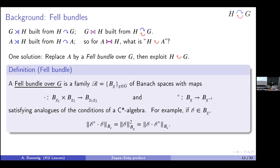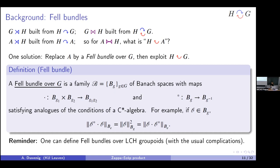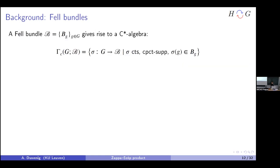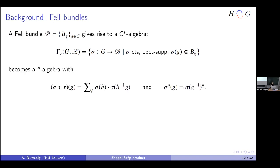These Banach spaces satisfy C*-like properties: for example, the norm of b*b equals the square of the norm of the element. I'll give examples on the next slide to show why Fell bundles are really a good class of objects for C*-algebras. All of this can be done for locally compact Hausdorff groupoids — discrete groups are not required. Given a Fell bundle, you can construct a C*-algebra out of it, just as with crossed products or group C*-algebras.